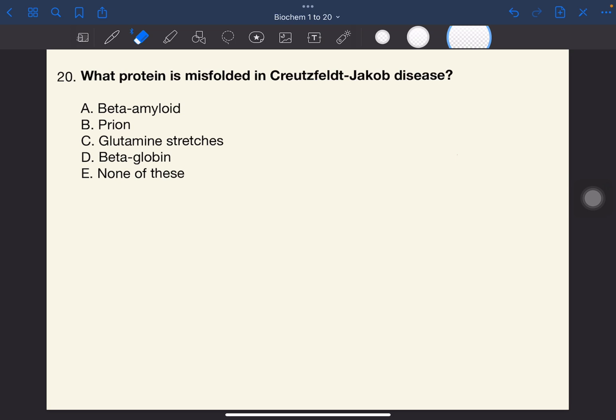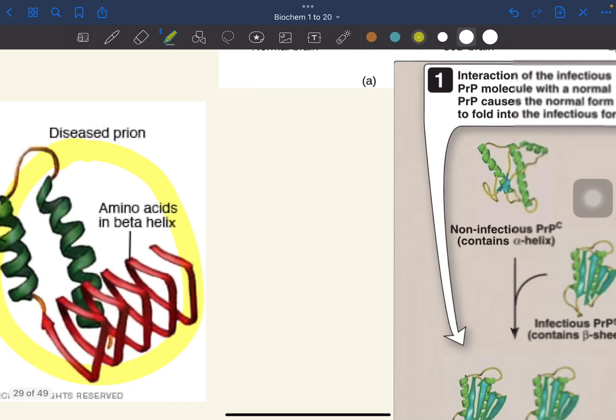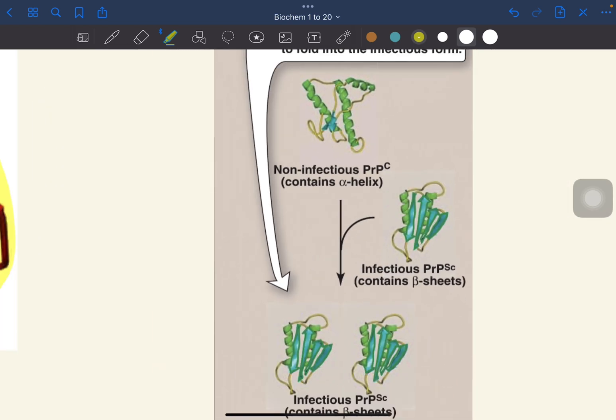Number 20. What protein is misfolded in Creutzfeldt-Jakob disease? The answer to this one is B, prion. This is a normal prion protein, and this is the misfolded one. When the two interact, the normal prion protein will be converted into the misfolded one.